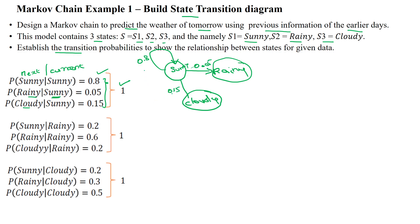Next, we select the rainy state as the current state. The probability of the next state being sunny given the current state is rainy — that is, today is rainy, what is the probability that tomorrow will be sunny — is 0.2.